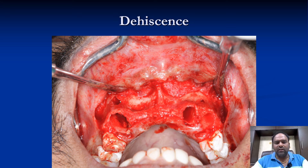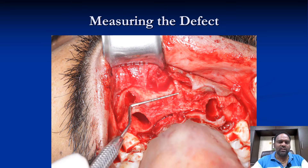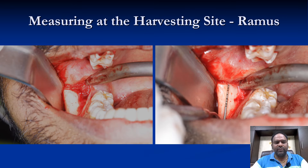There was dehiscence, fenestrations, and a cyst was also present on the root surface of the canine. Once extraction was done, this is how the area looked. We performed curettage with a serrated curette and with some round burs to remove any existing infection, and then we measured the defect.